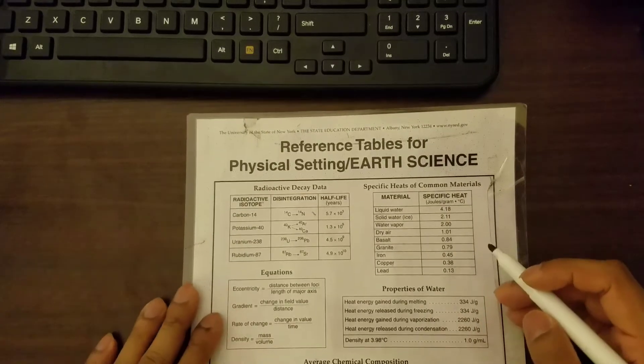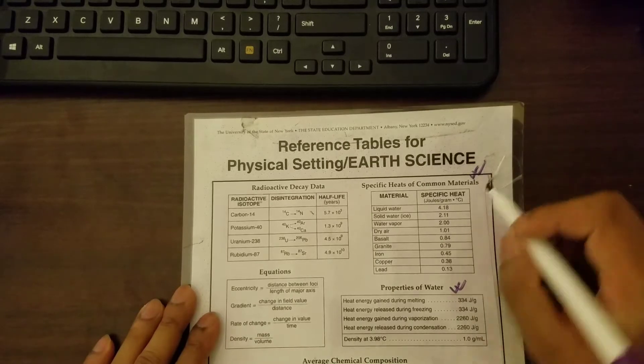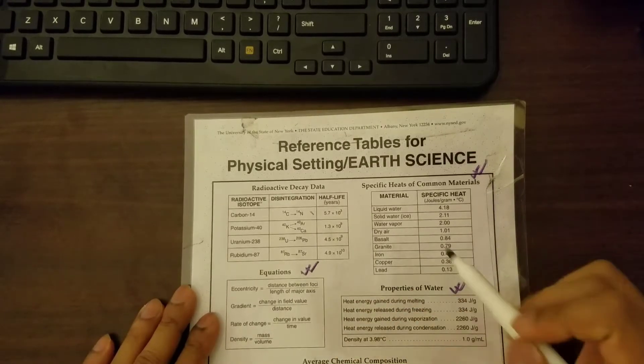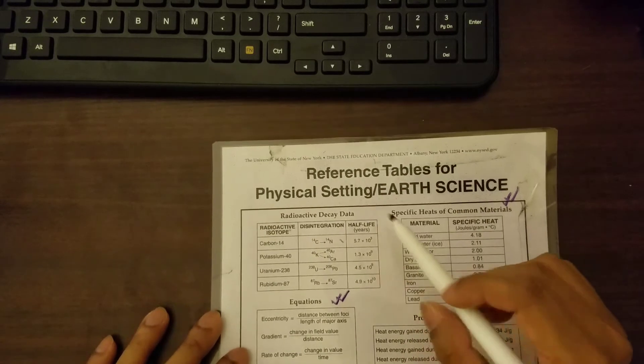So we already talked about properties of water, specific heat of common materials, and some equations. And today we're going to look at the radioactive decay data table.